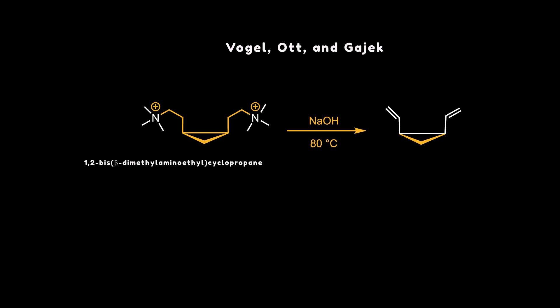Vogel, Ott, and Gajek had attempted to prepare the cis conformation through Hofmann elimination of trimethylamine from the cis isomer of 1,2-bis-beta-dimethylaminoethylcyclopropene. But the only product they could isolate was cyclohepta-1,4-diene. This outcome occurs because in the cis conformation, a Cope rearrangement leads directly to cyclohepta-1,4-diene, preventing isolation of the cis product.